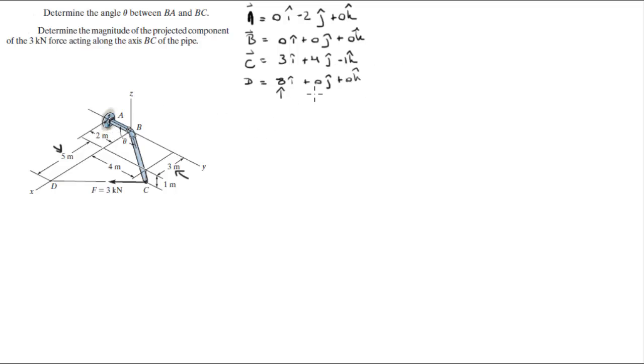Now we can find BA is equal to A minus B, so it's 0i minus 2j plus 0k. And the magnitude of this vector is obviously 2 because there's only one component.